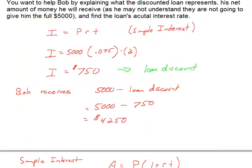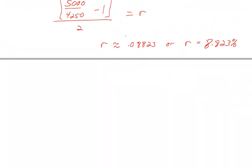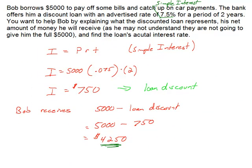So we can tell Bob, you know, they say that they're lending you $5,000, but in truth, they are actually going to be lending you $4,250, and the rate is 8.823%. So this may help Bob in the future make better decisions about which type of loan product to use.